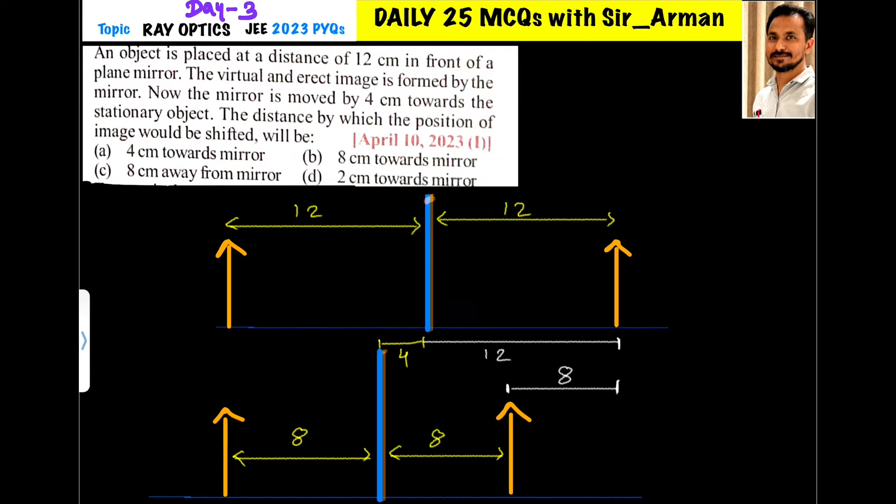An object is placed at a distance of 12 cm in front of a plain mirror. Here you have an object which is placed at 12 cm. Its virtual image is formed behind the mirror at 12 cm.